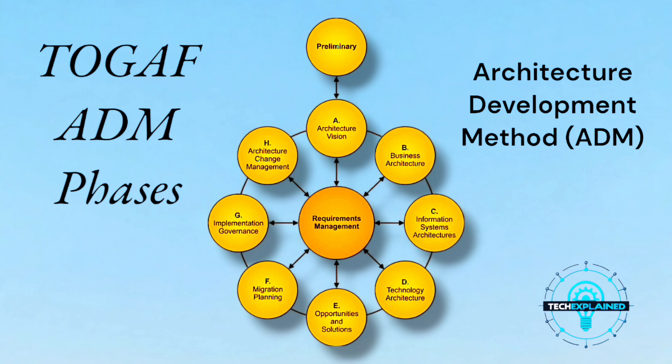So there you have it — the TOGAF ADM explained using a house-building analogy. Whether you're designing a dream home or building the IT backbone of a business, the ADM ensures you're working methodically, staying organized, and always adapting to change. If you enjoyed this explanation, give it a thumbs up, subscribe to Tech Explained, and let me know in the comments: how would you use TOGAF in your own projects? Let's chat about it. Thanks for watching, and see you next time.